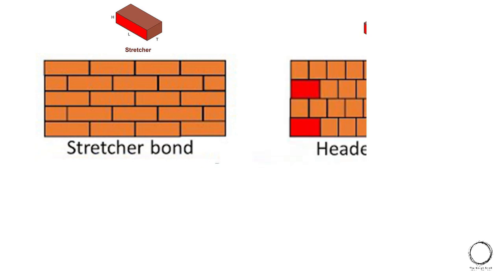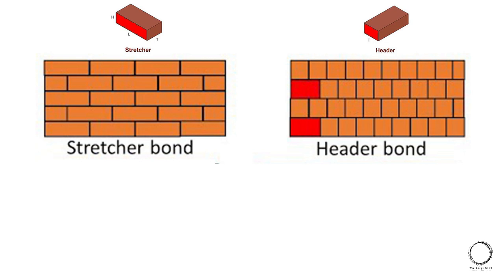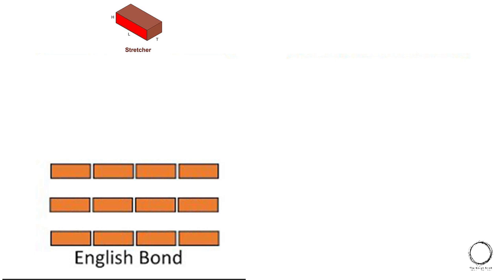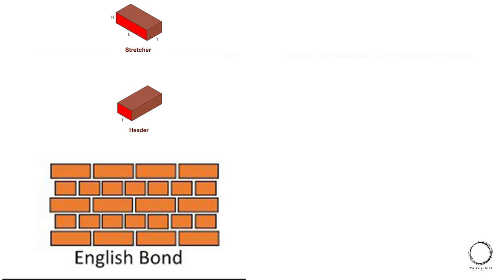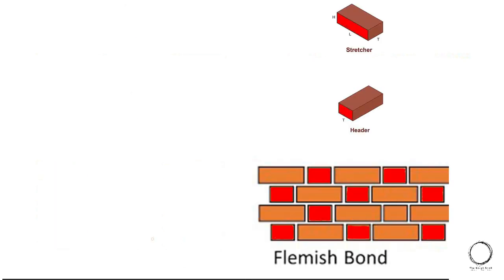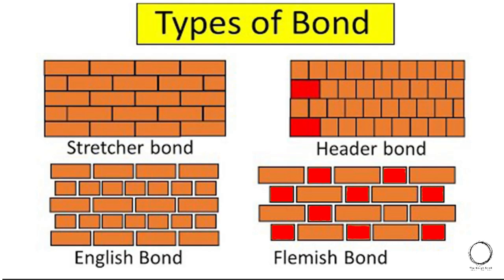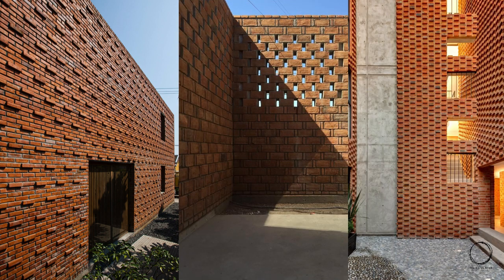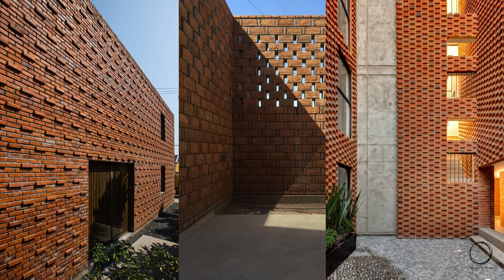These orientations are then placed in different types of bonds. In stretcher bond, the brick is placed in courses facing the stretcher surface at the front. In header bond, the thickness of the brick is exposed and placed in courses. In English bond, one course is laid in stretcher orientation alternating with header orientation. In Flemish bond, the stretcher and header brick orientations are laid alternately. There are four commonly used bonds, with many more possible through permutation and combination.